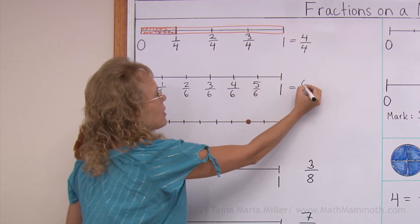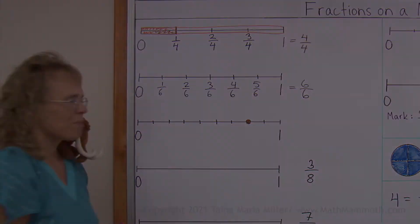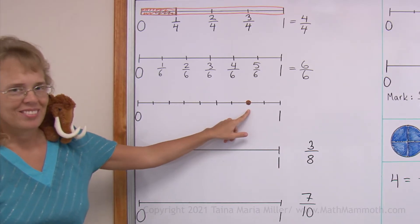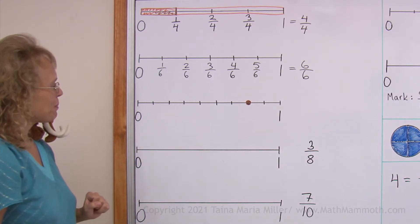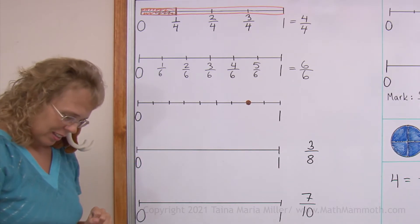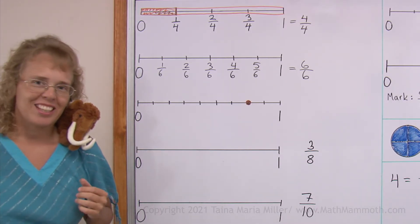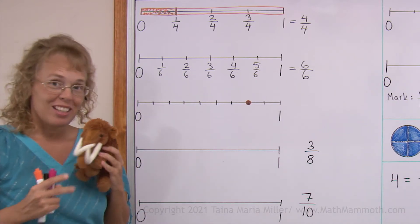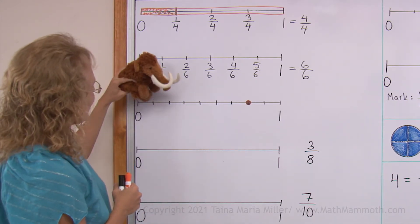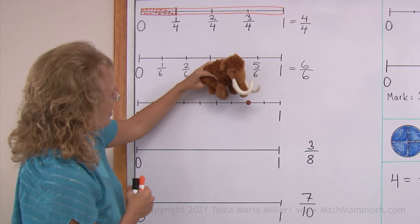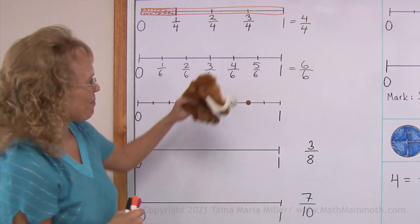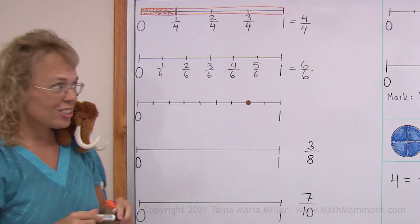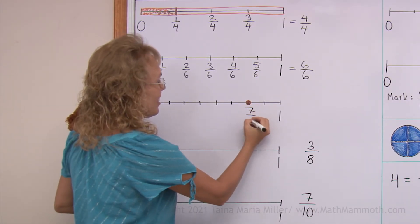And then this tick mark is the same as six sixths. Now, can you tell me what fraction does this dot mark? Matthew is saying — well, he's not saying the answer, he wants to jump on the number line. Matthew likes jumping on number lines. He took seven jumps and then two more jumps to reach to one. So the fraction is seven ninths, right?